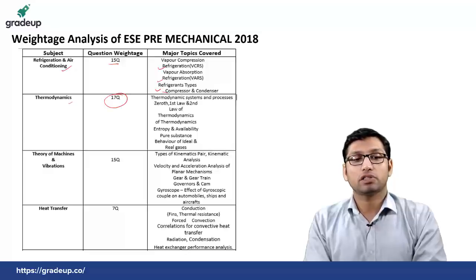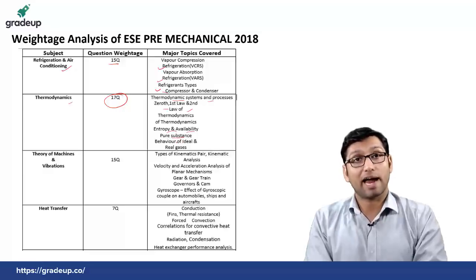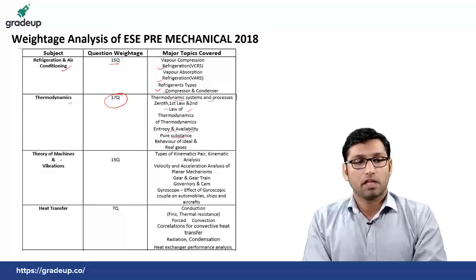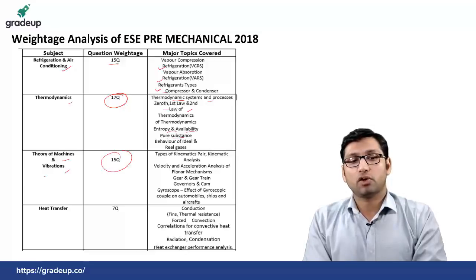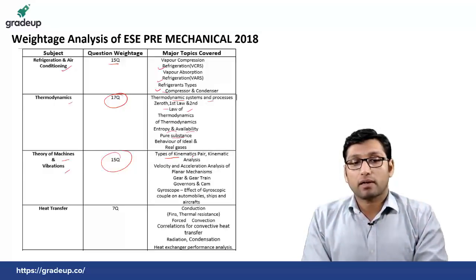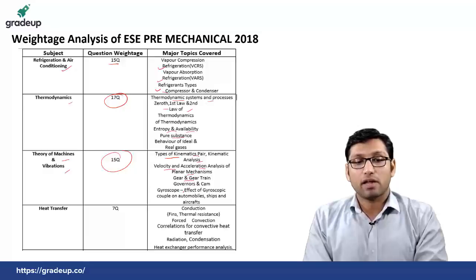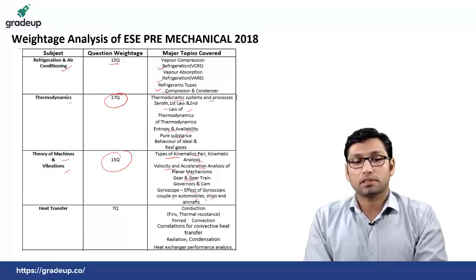From thermodynamics there were totaled 17 questions from thermodynamics system and processes, zeroth, first and second law of thermodynamics, entropy and availability, pure substance and behavior of ideal and real gases. Theory of machine and vibration had 15 questions this time — previously there were 24 questions — from the topics of types of kinematic pair, kinematic analysis, velocity and acceleration analysis of planar mechanism, gear and gear train. In gyroscope topic there were questions on the effect of gyroscopic couple on automobiles, ships and aircraft.